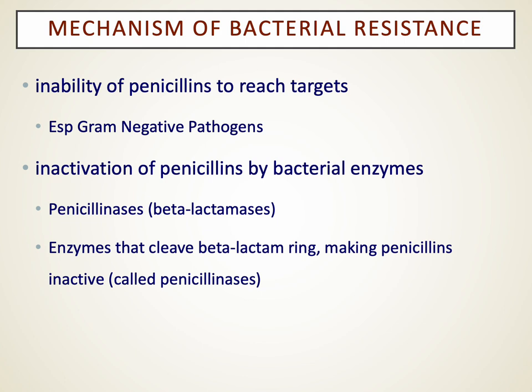Bacterial resistance to penicillins happened pretty early on after their introduction to Western healthcare. A number of bacteria are resistant to or outside the spectrum of many beta-lactams, including gram-negative pathogens. A subset of those gram-negatives produce beta-lactamases — enzymes that break down penicillin. A classic example is Haemophilus influenzae, which produces beta-lactamases, though several others do as well.